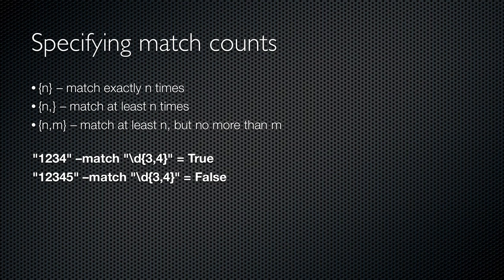Sometimes you'll want to be more specific about the matches you'll accept. You can specify match counts in curly braces. Specify a single number to indicate exactly how many matches you want — no more, no less. A number and a comma sets a minimum number of matches but allows any number beyond that. Two numbers separated by a comma provide a minimum and maximum. For example, 1234 matches backslash d{3,4} because there are at least three digits and no more than four. But 12345 doesn't match the same expression because five characters were found and only three or four are allowed.